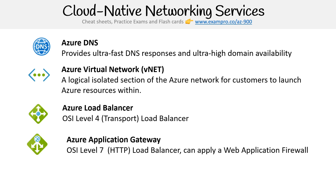Then you have Azure Application Gateway, and this is an HTTP load balancer. So it does understand requests coming from a web server. What you can do with it is you can actually route based on HTTP requests to specific services. It also allows you to apply a web application firewall because it is an application load balancer — that's why you can apply that web application firewall, which is a separate service.